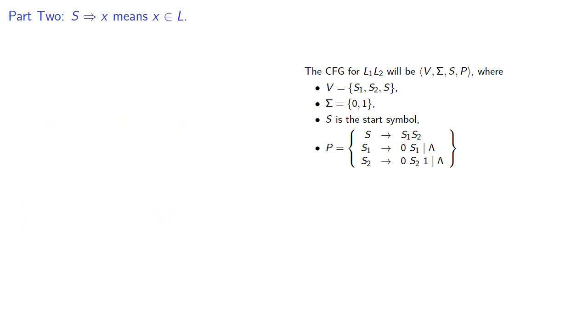So let's go the other way. Suppose S produces x. Now remember the only production rule from S is S produces s1s2. And since S produces x, then s1s2 must produce x.